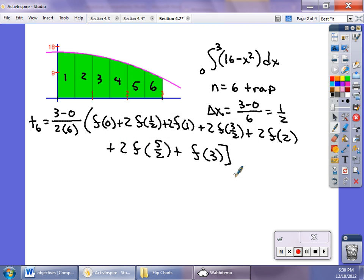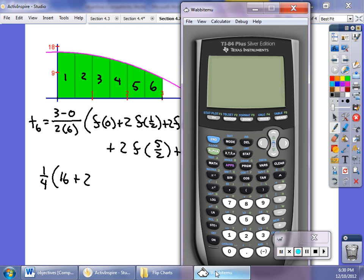Working this down, this part is one-fourth. If I plug in f(0), I get 16—that's the first height. Plus 2 times f(1/2). Let me get back to my calculator. It starts at zero and goes up by one-halves.